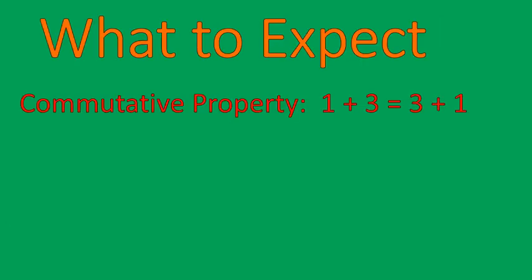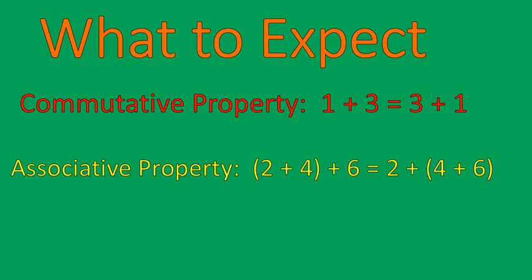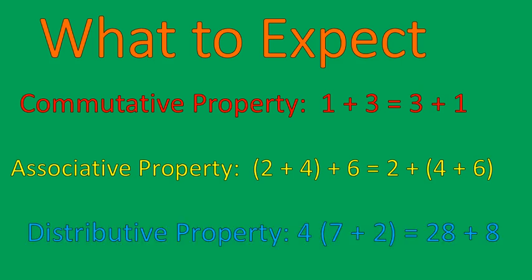A quick recap of what we've gone over. One: commutative property — you can move the numbers back and forth. Two: associative property — leave the numbers in the same order and move the grouping symbols. Three: distributive property — take what's outside the parentheses and multiply it times each term inside the parentheses. Hope that was helpful for you. Have a wonderful day.